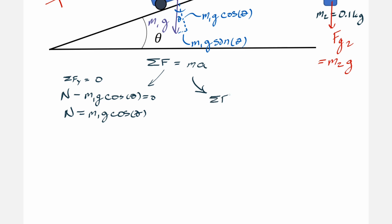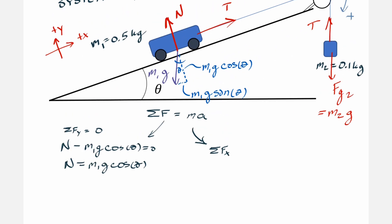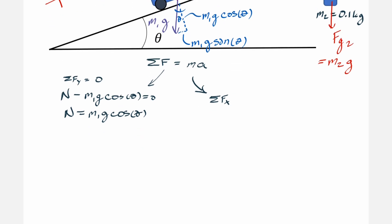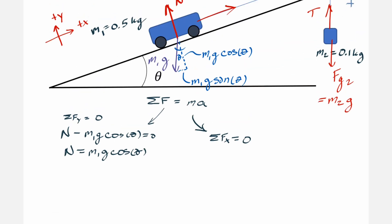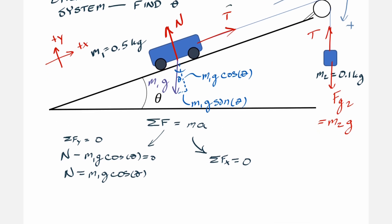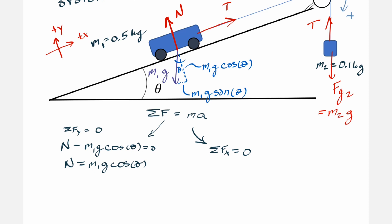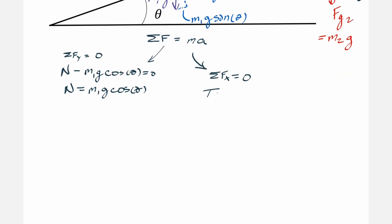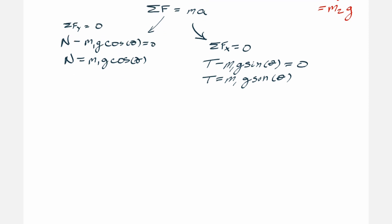Now for the x direction — the direction parallel to the ramp. Sum of forces in the x direction equals ma, but ma equals zero, so it equals zero. The positive force is tension going up the ramp; the negative force is m1g sine theta. So: tension minus m1g sine theta = 0, which gives us tension = m1g sine theta.